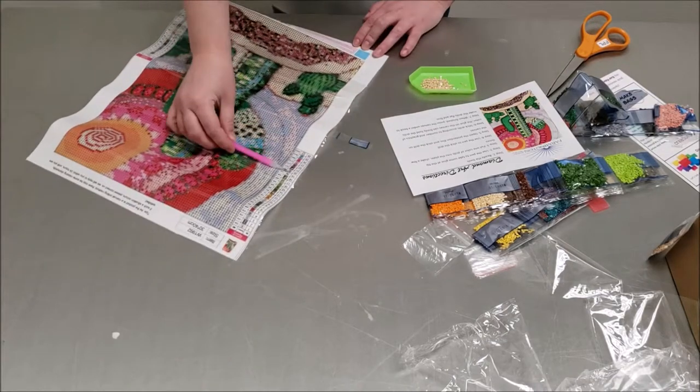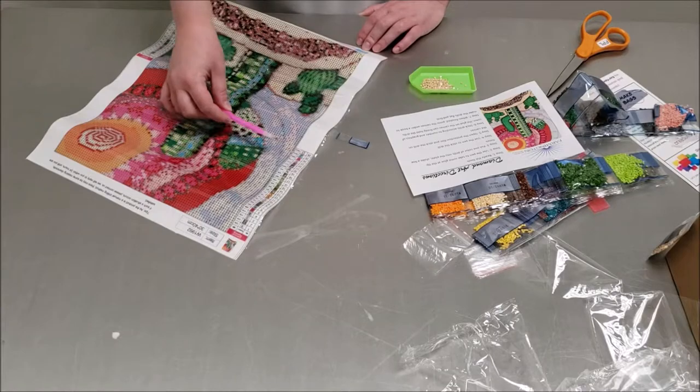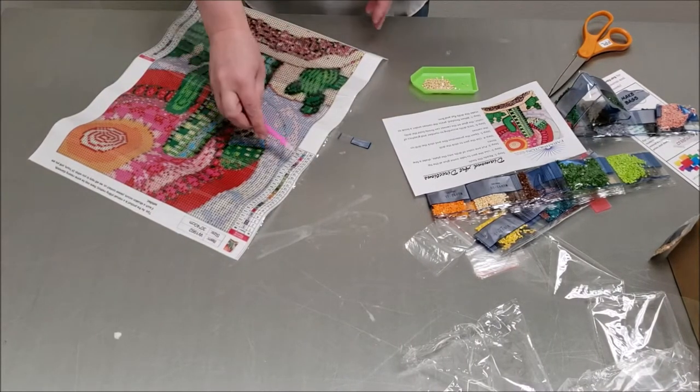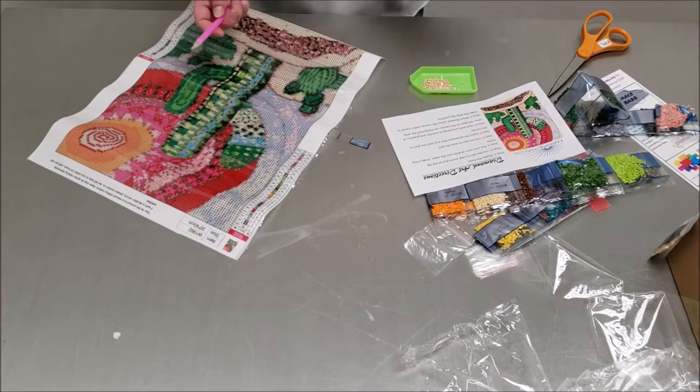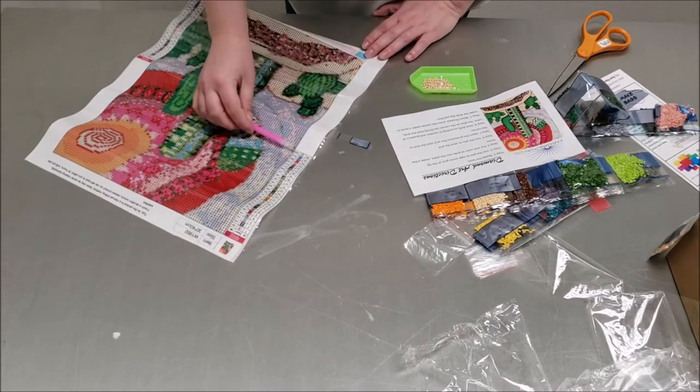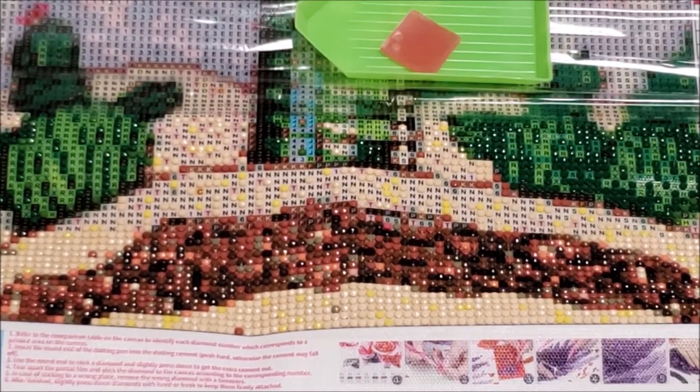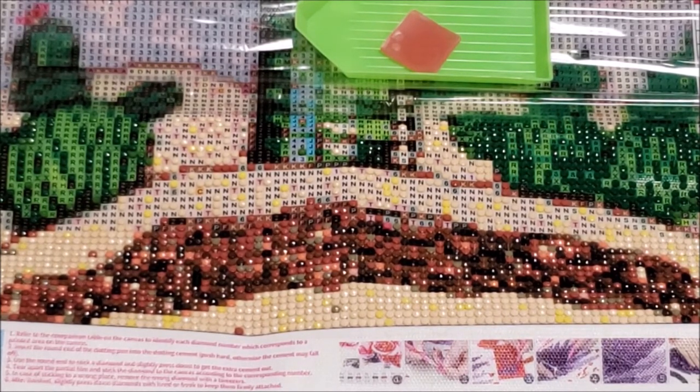And just go to every nine and put one of these on. Sometimes the numbers and letters don't correspond directly. Sometimes if you get a diamond art canvas that has a lot more colors, you'll have a lot more numbers and there might be symbols. But in these cases, it's just letters and numbers.